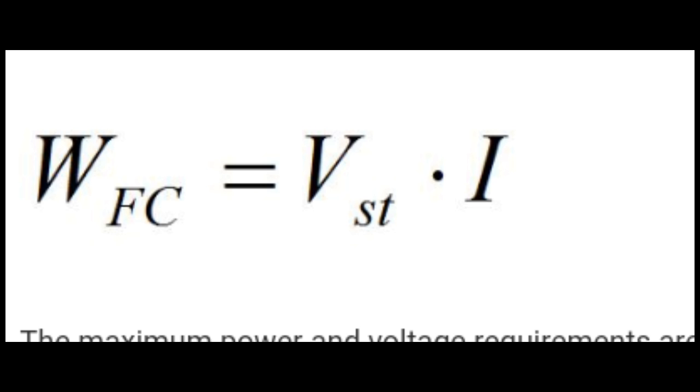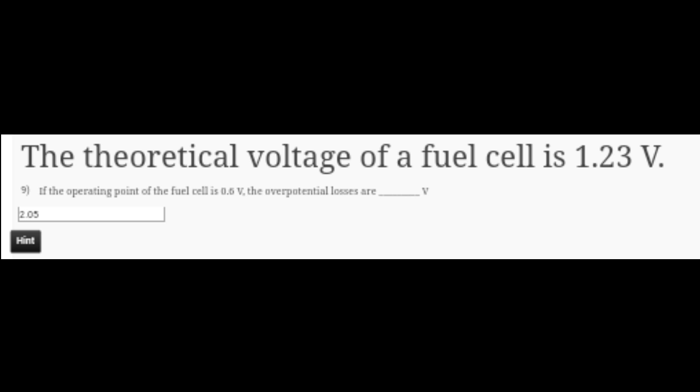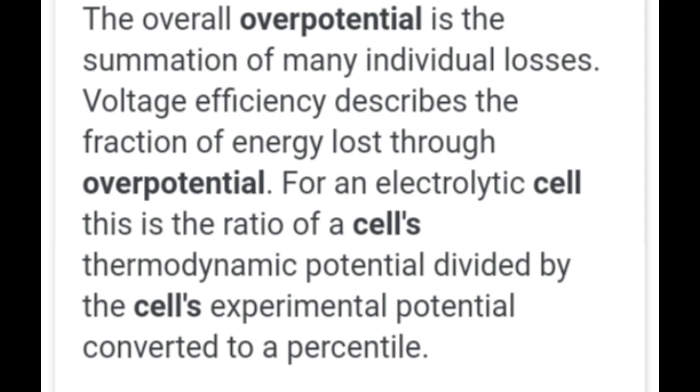Question 9: If the theoretical voltage of a fuel cell is 1.23 volt and the operating point is 0.6 volt, the over potential losses are 2.05 volt. For an electrolytic cell, this is the ratio of the cell's thermodynamic potential divided by the cell's experimental potential converted to a percentile. So 1.23 divided by 0.6 equals 2.05 volt.